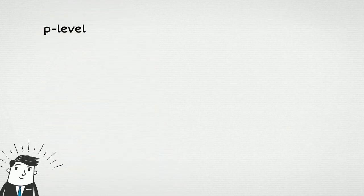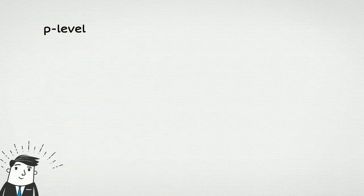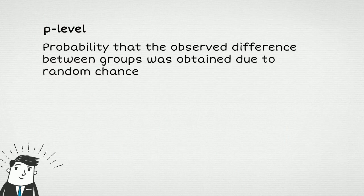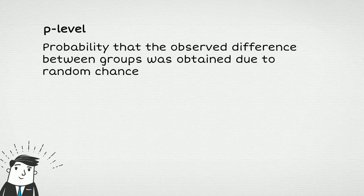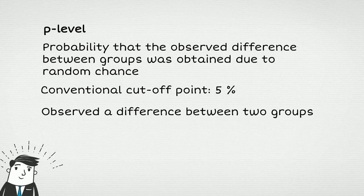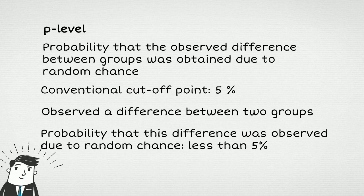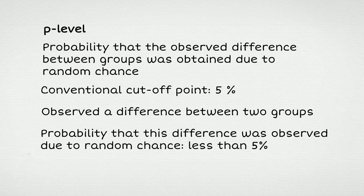Any inferential statistical test results in the calculation of the p-level, the probability that the observed difference between groups was obtained due to random chance. Social scientists agreed long ago that the conventional cutoff point will be 5%. That is, if in your experiment you have observed the difference between the experimental group and the control group, and if the probability that this kind of difference is due to random chance is less than 5%, then you consider this result to be statistically significant.